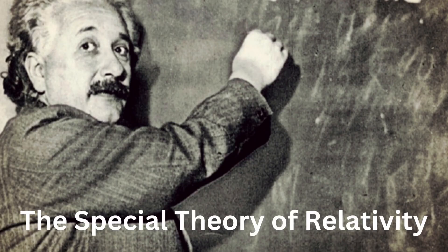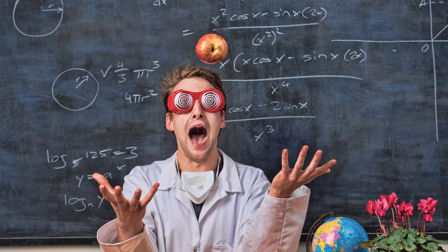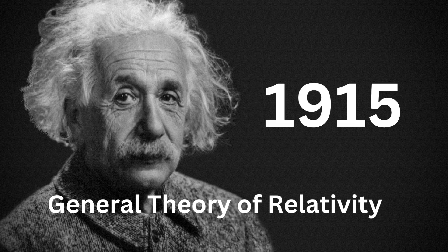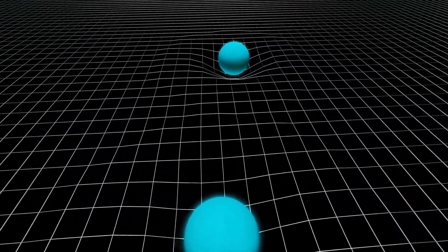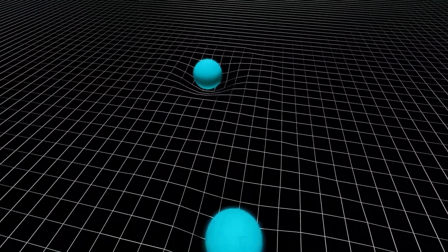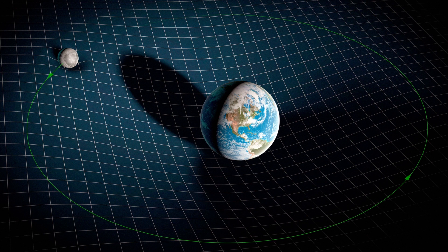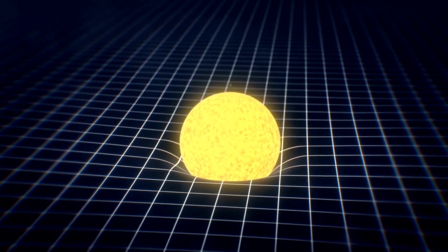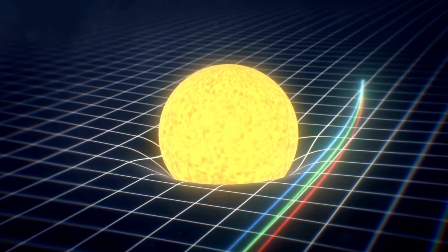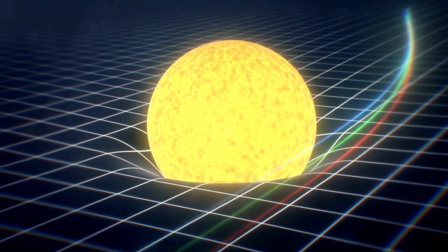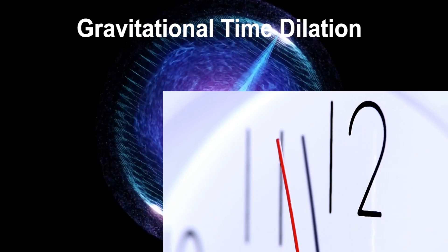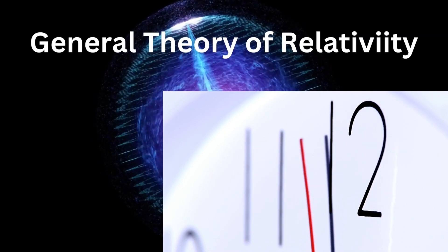These ideas of the special theory of relativity are expanded to include gravity in Einstein's general theory of relativity, which was published in 1915. According to this definition, gravity is the bending of space-time brought on by the existence of mass and energy. Big objects like planets and stars bend or distort space-time, causing other things travelling close by to get caught up in this curvature and therefore being pulled into curved motions. The phenomena of gravitational time dilation — when time moves more slowly in the presence of a gravitational field — is also predicted by the general theory of relativity.